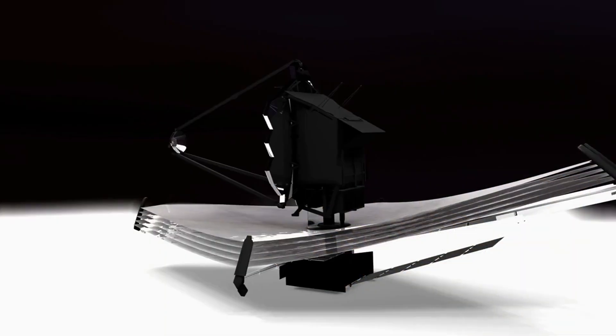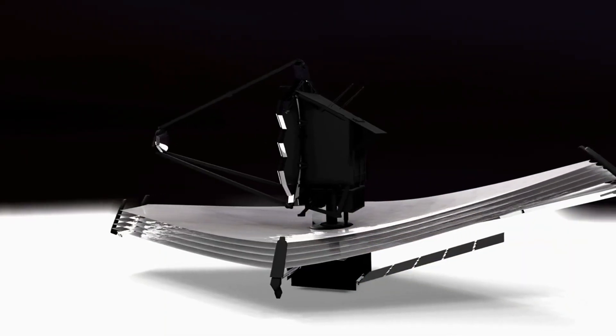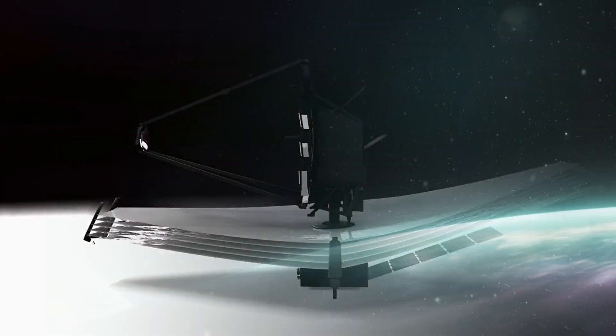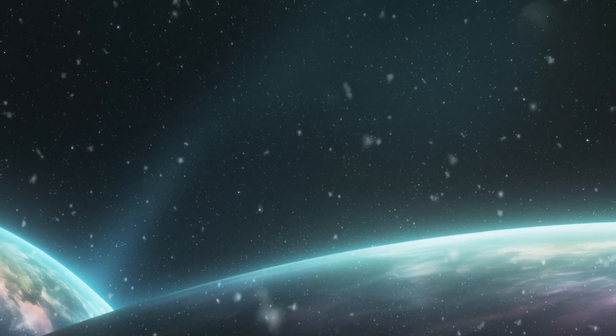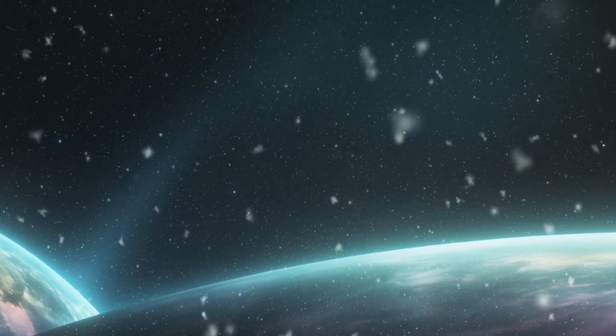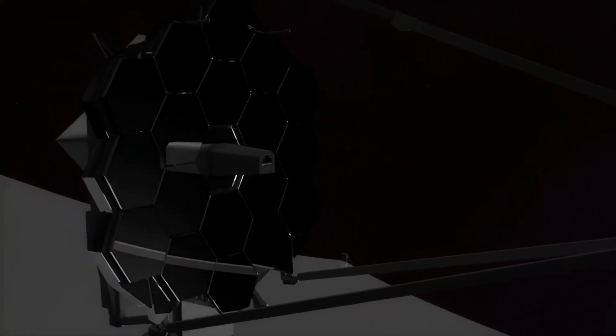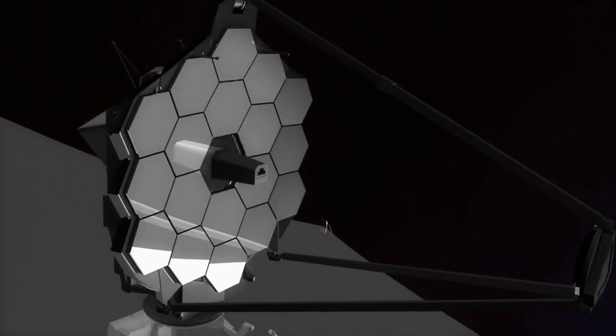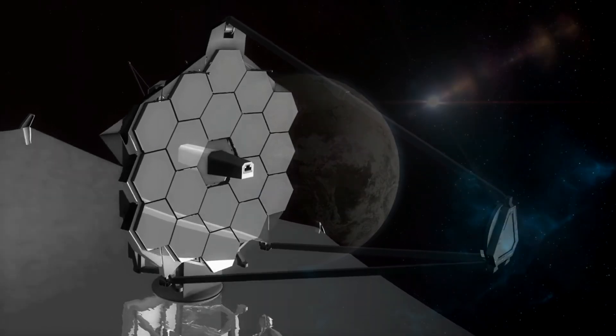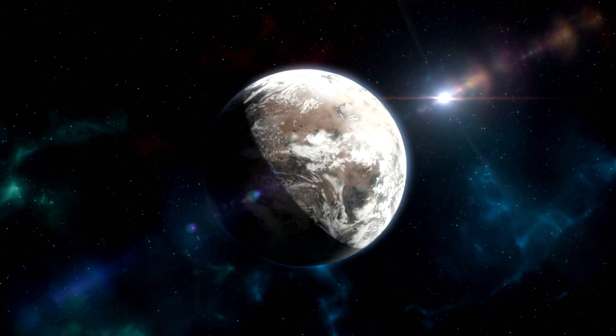It took its first direct picture of an exoplanet in September of last year. The planet was identified in 2017 and given the name HIP 65426b. Scientists utilized the telescope's coronagraphs, which excluded the light from the central star, together with two of Webb's cameras, a number of filters, and other equipment to view it.